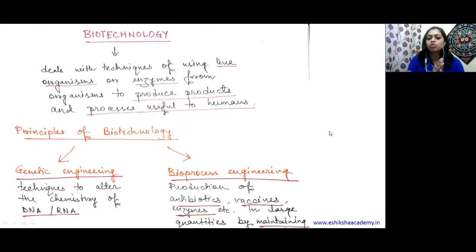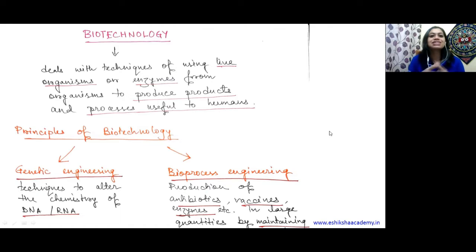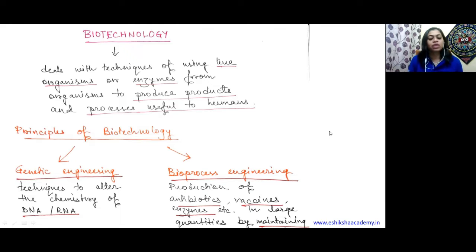Biotechnology is a vast field - a broad term with different categories. The first is genetic engineering and the second is bioprocess engineering. These are two broad principles of biotechnology.